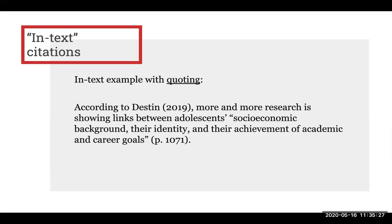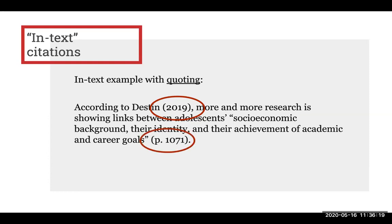Here is one more example of using quoting. This is an example of how you can get creative and incorporate an in-text citation into your writing. Notice that this reads "according to Destin," which is the writer's way of working the author's name directly into the sentence. This is followed by the in-text citation, but since the author's last name was already mentioned, there's no need to include it again. So the in-text citation is made up of just the year within the parentheses. The page number in parentheses is placed at the very end of the sentence, followed by a period.